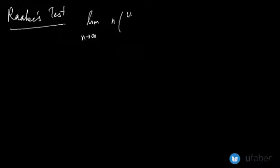for this expression, that is n into (u_n by u_(n+1) minus 1). Let us say this is equal to k.